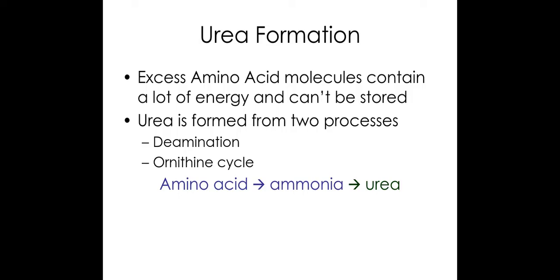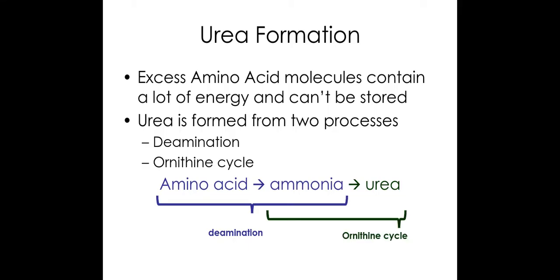Urea is formed in two stages. First, in the deamination of an amino acid. When amino acids are in excess in our blood, we cannot store them, so they have to be broken down — they still contain quite a lot of good resources to be used by our bodies, so we want to extract some energy from them. Deamination of the amino acid into ammonia occurs in the hepatocytes, and then ammonia is converted into urea using the ornithine cycle, again within the hepatocytes.